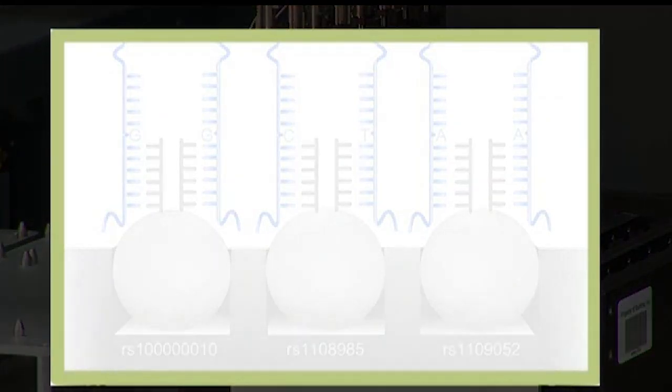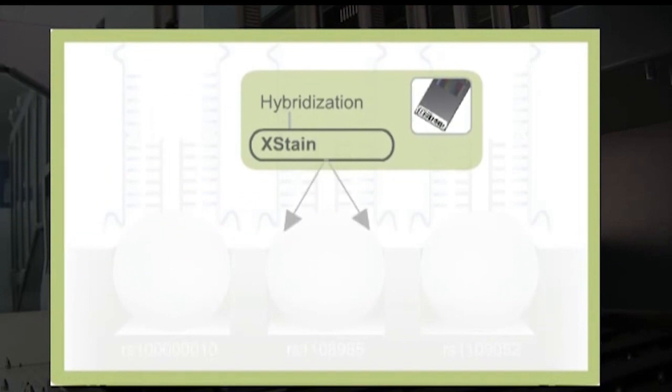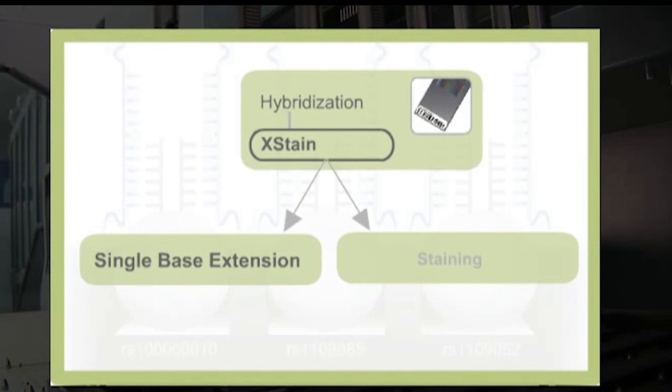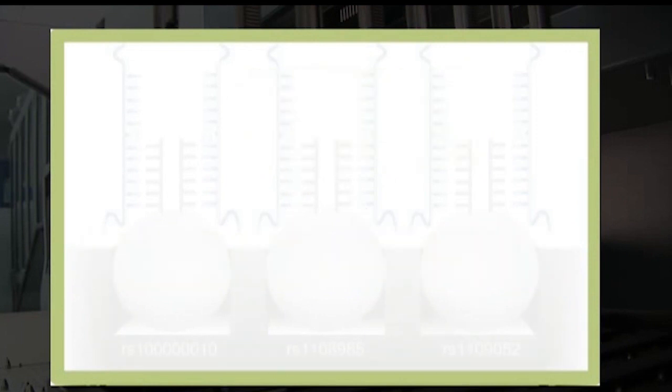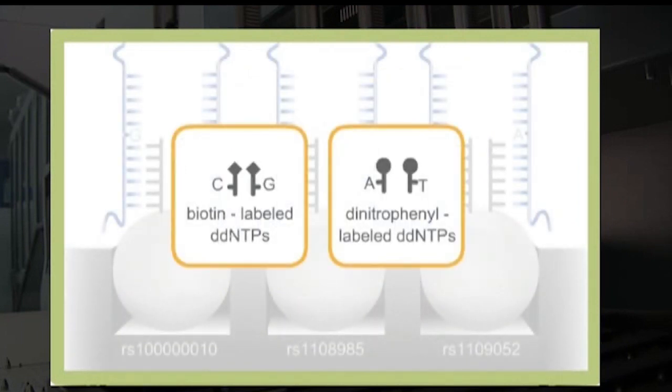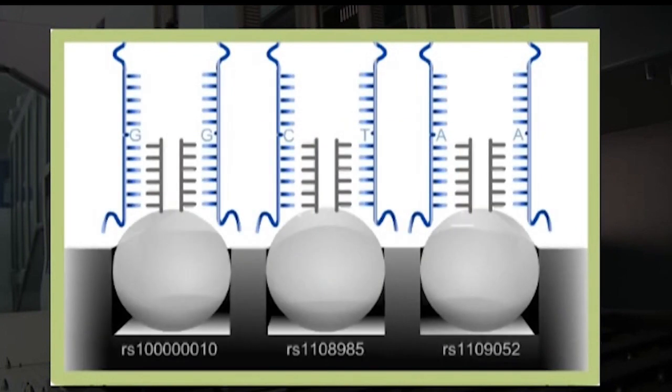The Infinium assay step X-Stain is a conjugation of extension and staining. The extension reaction adds a single labeled base to each probe. The purpose of this step is to discriminate between SNP genotypes. The single base extension reaction uses chain-terminating dideoxynucleotides. The A and T nucleotides are labeled with dinitrophenyl, abbreviated as DNP, and the G and C nucleotides are labeled with biotin. The probes are enzymatically extended by a single base, and the label identifies the SNP genotype.